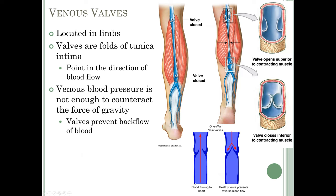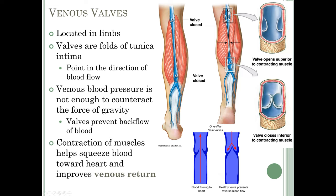Blood flows toward the heart, and when you move around and your muscles contract, that pushes the blood upward, then the valves close to prevent backward flow. Contraction of the muscles in your limbs helps squeeze blood toward the heart and improves venous return. This is one reason why exercise and walking are good for you. Long periods of sitting work against you because you won't have as much muscle contraction to help push venous blood back to the heart.